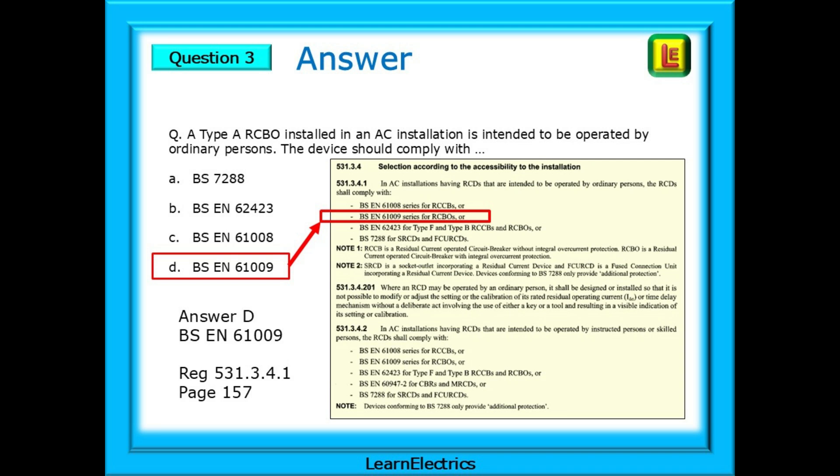To find the regulation, look in the index on page 601. Look down the left-hand column, which is mostly residual current devices, and near the bottom is an entry: Precautions to be taken where ordinary persons may operate device. This will direct you to 531.3.4.201, found on page 157, and immediately above .201 is the regulation that you need.